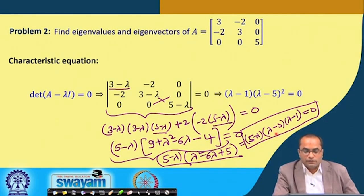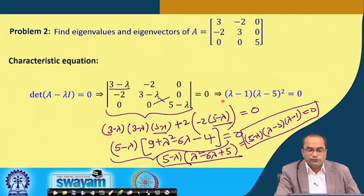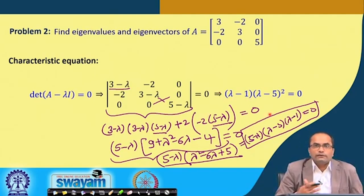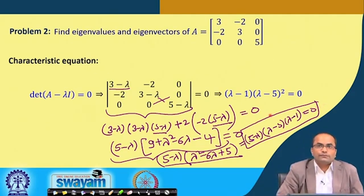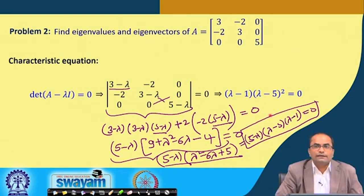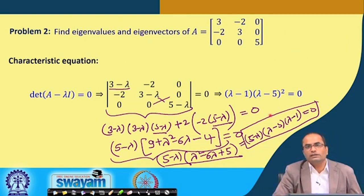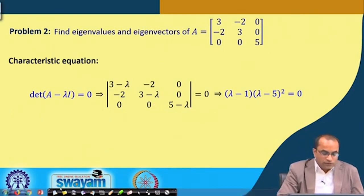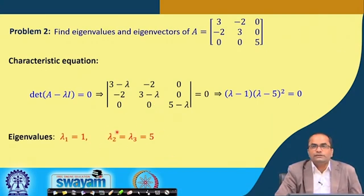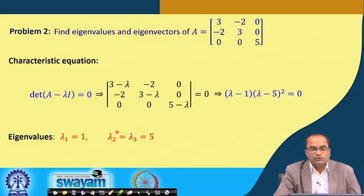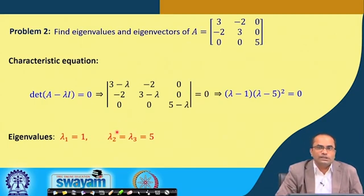From the characteristic equation we get two distinct eigenvalues: λ = 1, and λ = 5 which is repeated twice. These are the two eigenvalues, and we need to compute the eigenvectors corresponding to each.